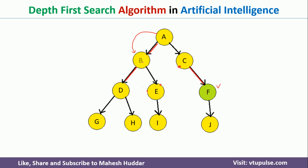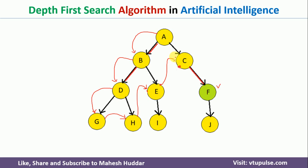Now B is not a goal node, so it will go to the left sub-tree of B, that is D. When it comes to D, D is also not a goal node, so it will go to G. Once it reaches this particular leaf node, it will try to get the right child of D, which is H. H is also not a goal node, so it will backtrack and then try to get the right side, that is E.